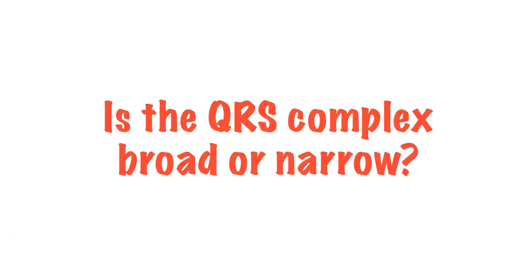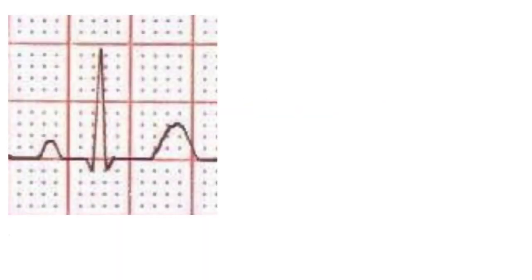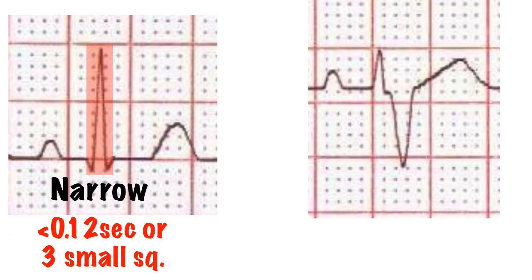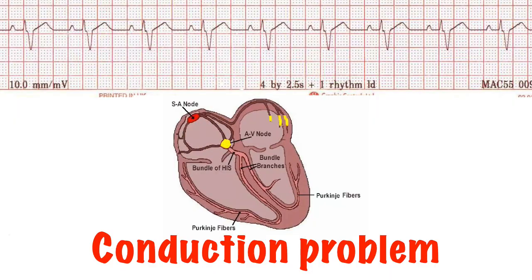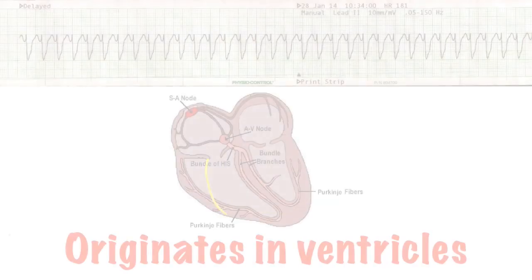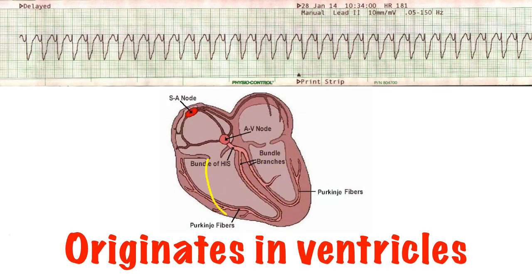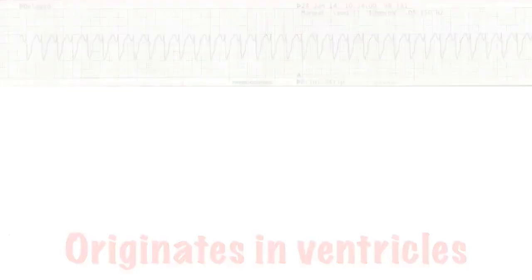The QRS complex should be less than 0.2 of a second or three small squares. Anything over this can be defined as broad. This will be due to a conduction problem — the electrical impulse finding the normal fast-moving bundles blocked and having to go down a back route — or because the impulse originates in the ventricles, such as in ventricular tachycardia.